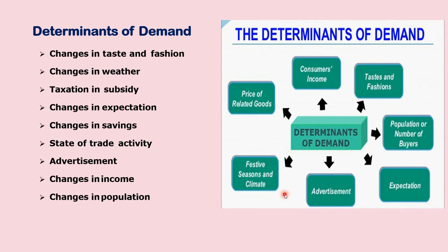The third determinant is taxation and subsidy. If fresh taxes are levied or existing rates of taxation on commodities increase, then there will be an increase in price. When you have to pay more tax on a product, the price increases and the demand falls down. When price increases, demand reduces. If there is a subsidy — meaning a discount or incentive given by the government — people tend to buy more. So, when there is a subsidy, there will be an increase in demand; when there is over-taxation, there will be a decrease in demand.